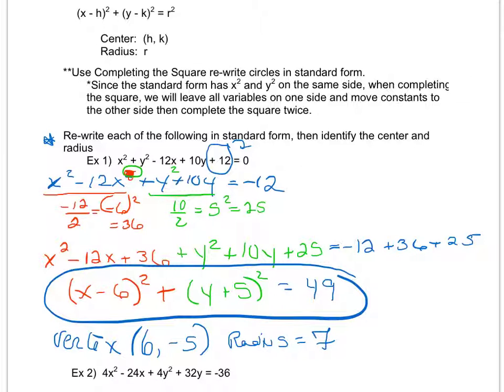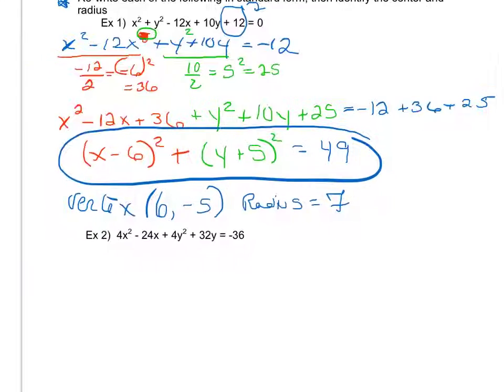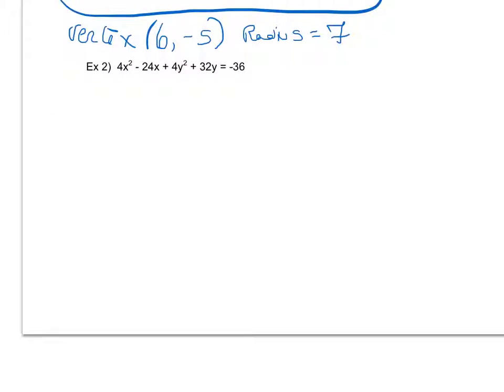So let's look at another example. Again notice all I did was do the completing the square twice. So let's do that again. So it looks like to start this one I already have all of my x terms and all of my y terms on the same side.